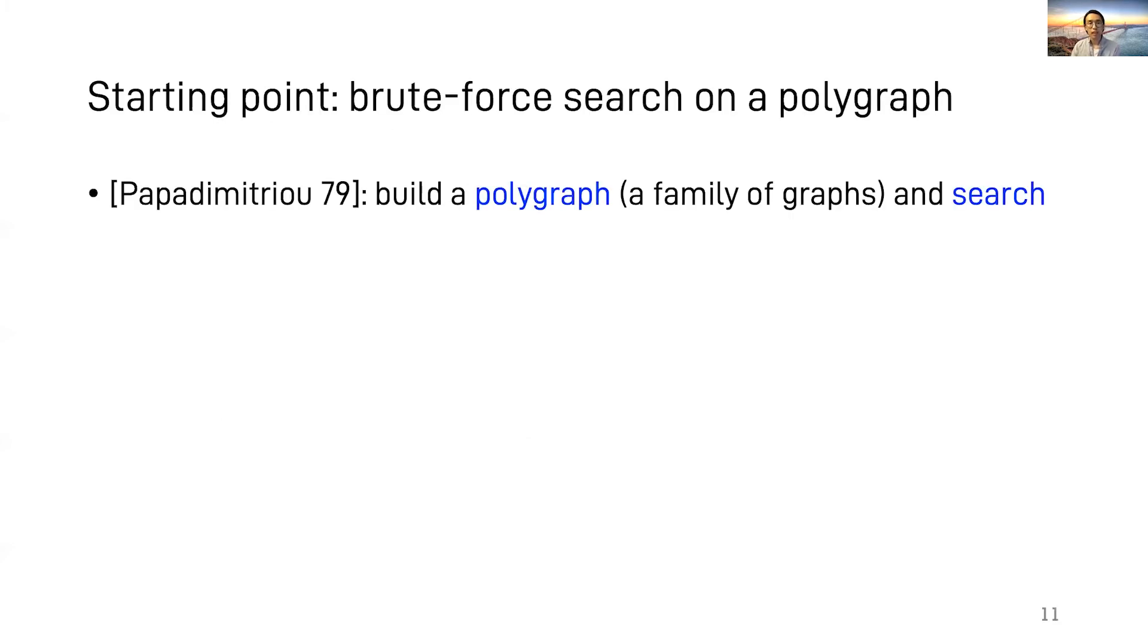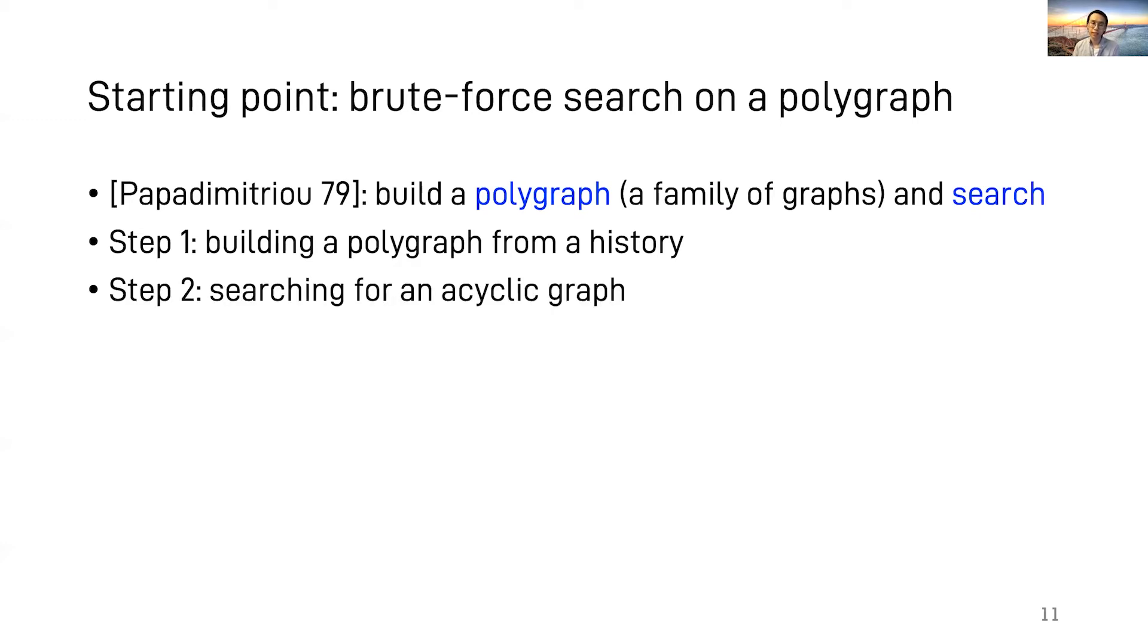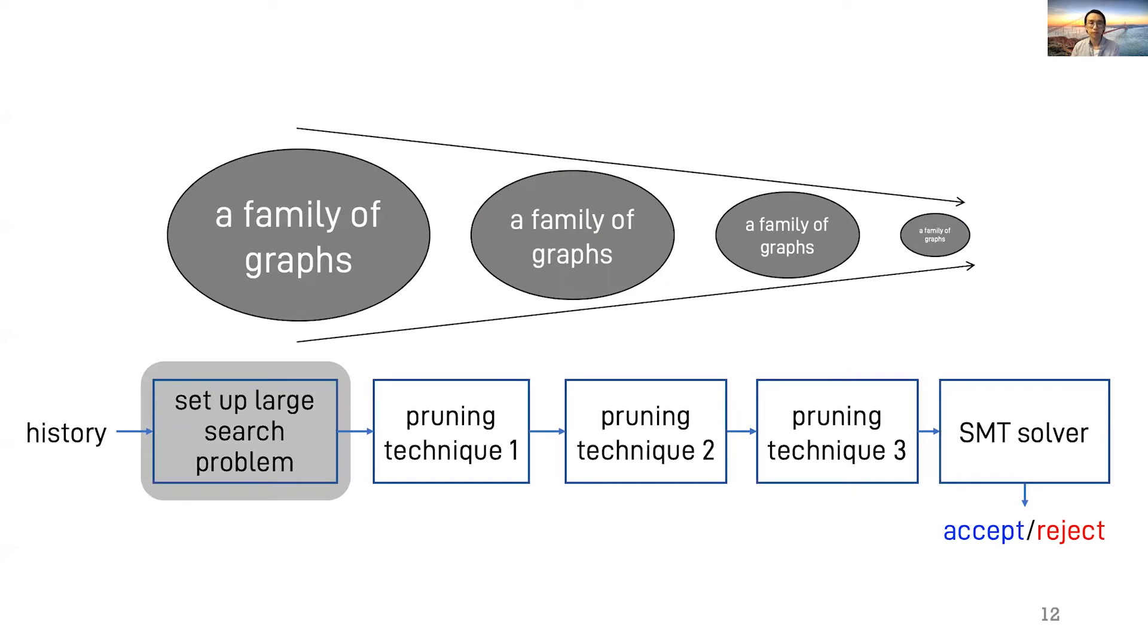This question has been answered by Papadimitriou many years ago. Papadimitriou's solution first builds a data structure called polygraph, which represents a family of graphs, as we mentioned earlier. Then it searches for an acyclic graph in this family. Next, I'm going to elaborate these two steps as a starting point of Cobra. The brute force search approach also intuitively shows us why this problem is hard.